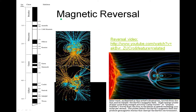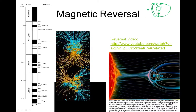The North Pole has flipped at different times — not the geographic pole; the Earth isn't flipping. The magnetic pole flips. We don't exactly know why. Right now the magnetic field goes from south to north. Sometimes in the past we know it's flipped and gone the other way — north to south.